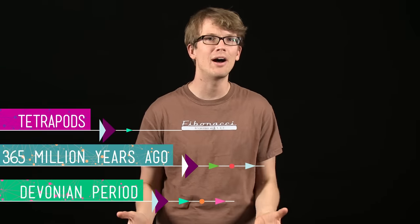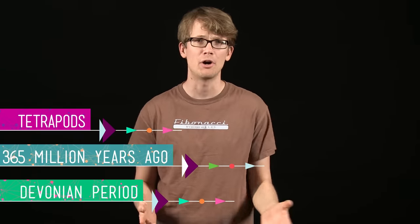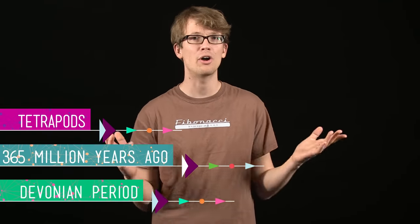Now there were whole new ecosystems to explore, adapt to, and create. During the Devonian period, about 365 million years ago, tetrapods — four-legged vertebrates that probably evolved from lobe-finned fishes — showed up on land, and so did arthropods like insects and spiders. From here, we begin to see ecological systems that we recognize today, because organisms were changing their environments by consuming oxygen in the atmosphere and releasing carbon dioxide.